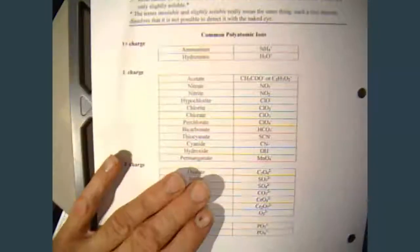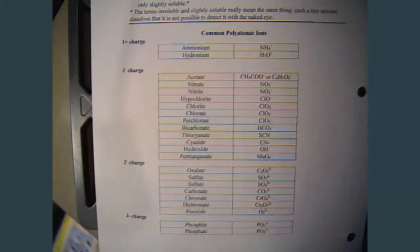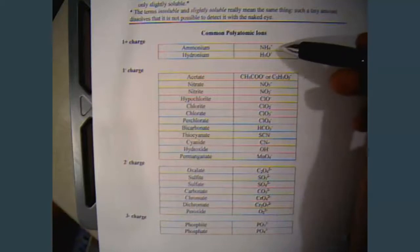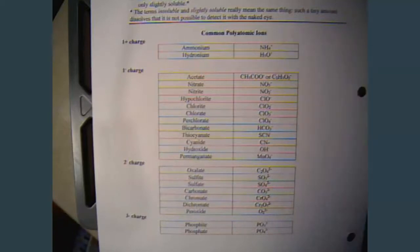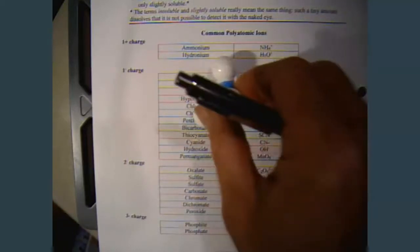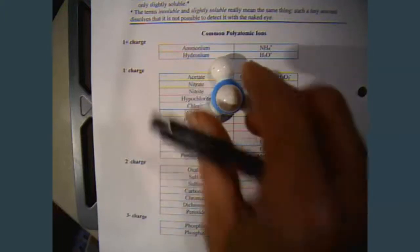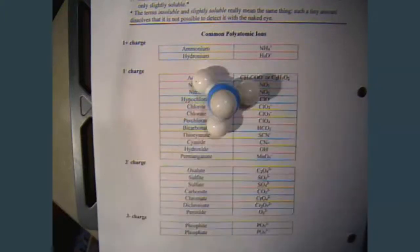So quickly looking at the polyatomic ion sheet, you may notice that there is only one polyatomic ion that has a positive charge that we're going to have to worry about, and that is ammonium NH4. NH3 is ammonia. NH4 looks like this, and that is ammonium.